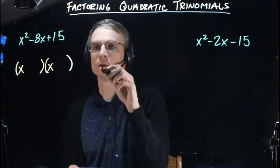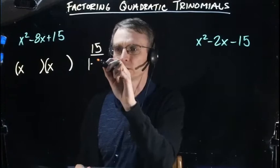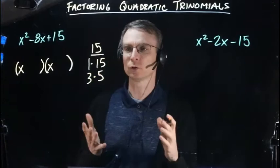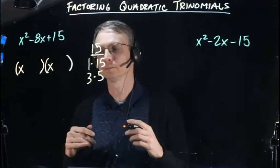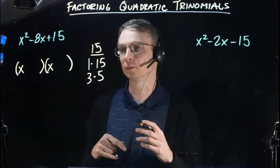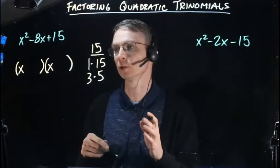Now we need to factor 15. The factors are 1 times 15 and 3 times 5. I'm going to try 3 and 5, since I like to try the set that's closer together.